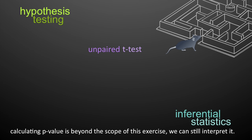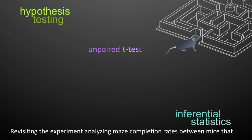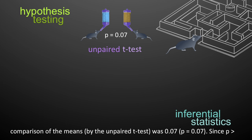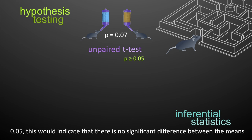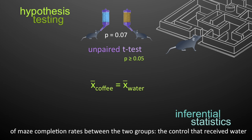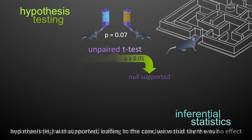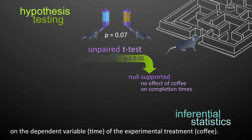While the process of calculating the p-value is beyond the scope of this exercise, we can still interpret it. If the p-value of the comparison was 0.07, since p is greater than 0.05, this indicates no significant difference between the means of maze completion rates between the two groups. In this case, we would say the null hypothesis was supported, leading to the conclusion that there was no effect of the experimental treatment — coffee — on the dependent variable, time.